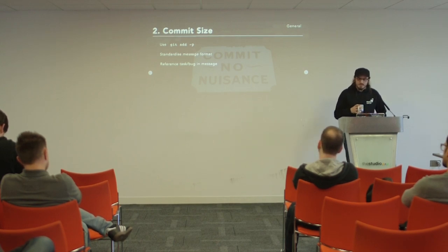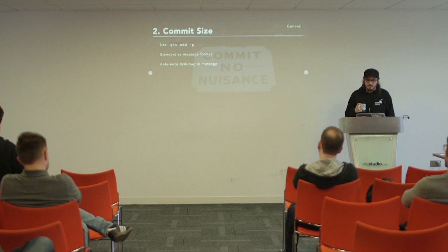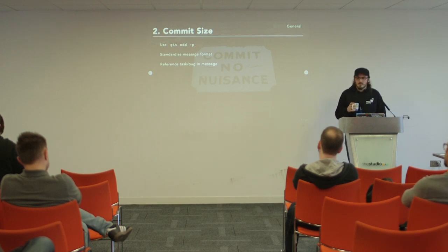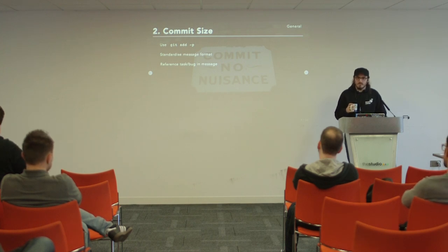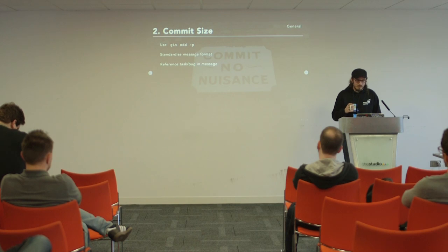If you're working in a team, agree on a standard commit message format. Reference the ticket you're fixing if you have a task system. We tend to start all our messages with a verb — 'fixed this', 'added this', 'changed this' — and explain why if it's not obvious. That way someone can go through the git log, look at all the messages, and understand exactly what's been added and when.